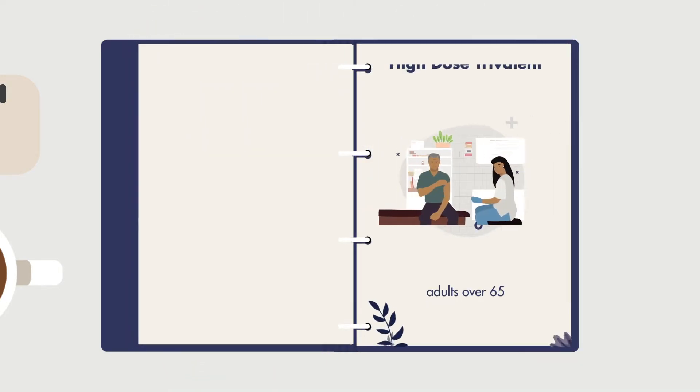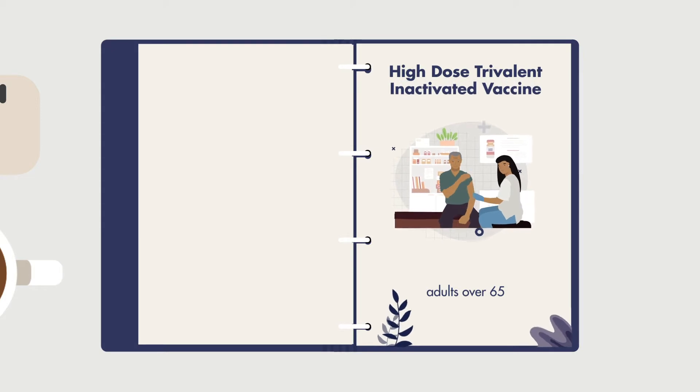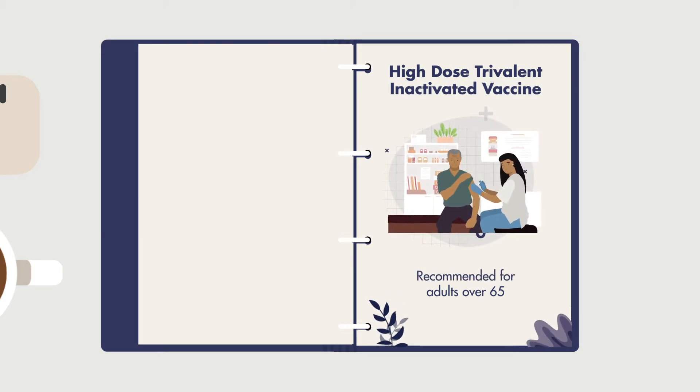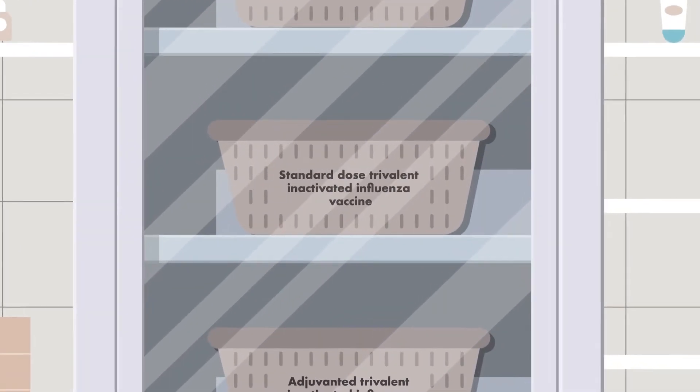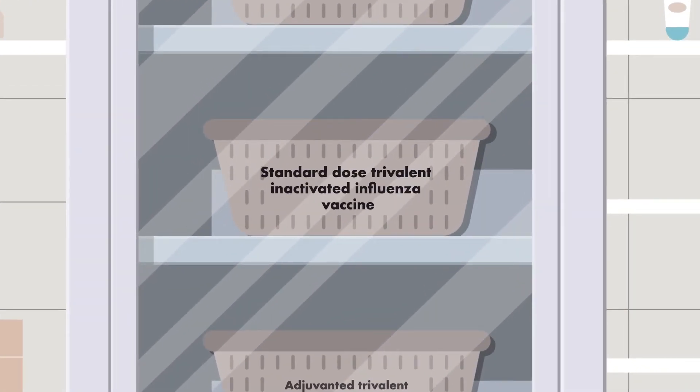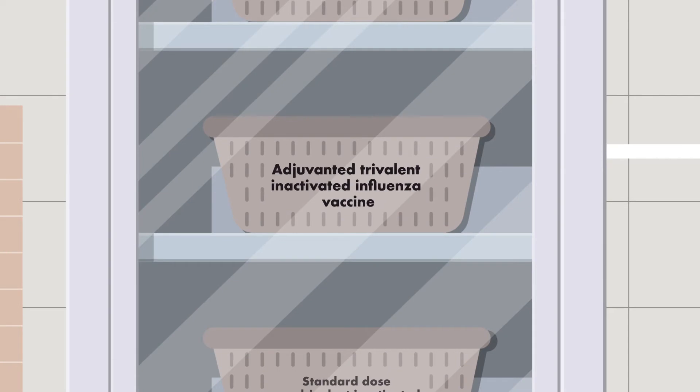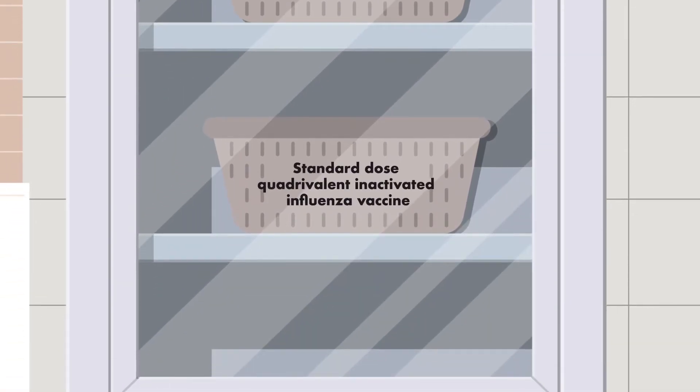For adults over 65, the high-dose trivalent inactivated vaccine is currently recommended when available. Other options for this population include standard-dose trivalent inactivated vaccine, adjuvanted trivalent inactivated vaccine, and a standard-dose quadrivalent inactivated influenza vaccine.